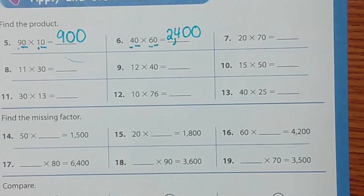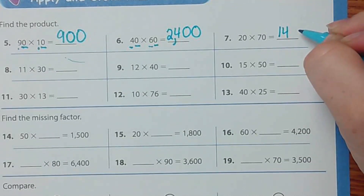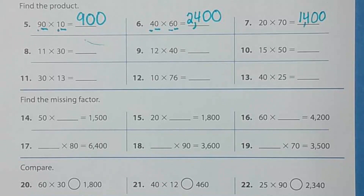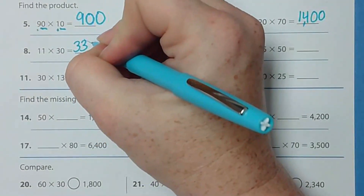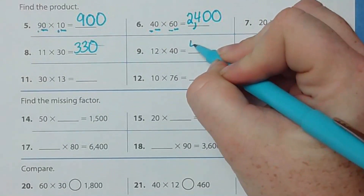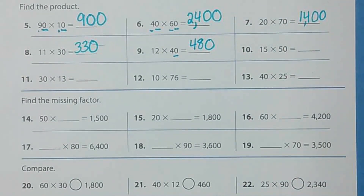Number 7: 2 times 7 — how many zeros do we add? Number 8: 11 times 30. What is 11 times 3? It's 33. Plus how many zeros? One zero. The answer is 330. Number 9: 12 times 40. Twelve times 4 is 48, plus one zero — the answer is 480.